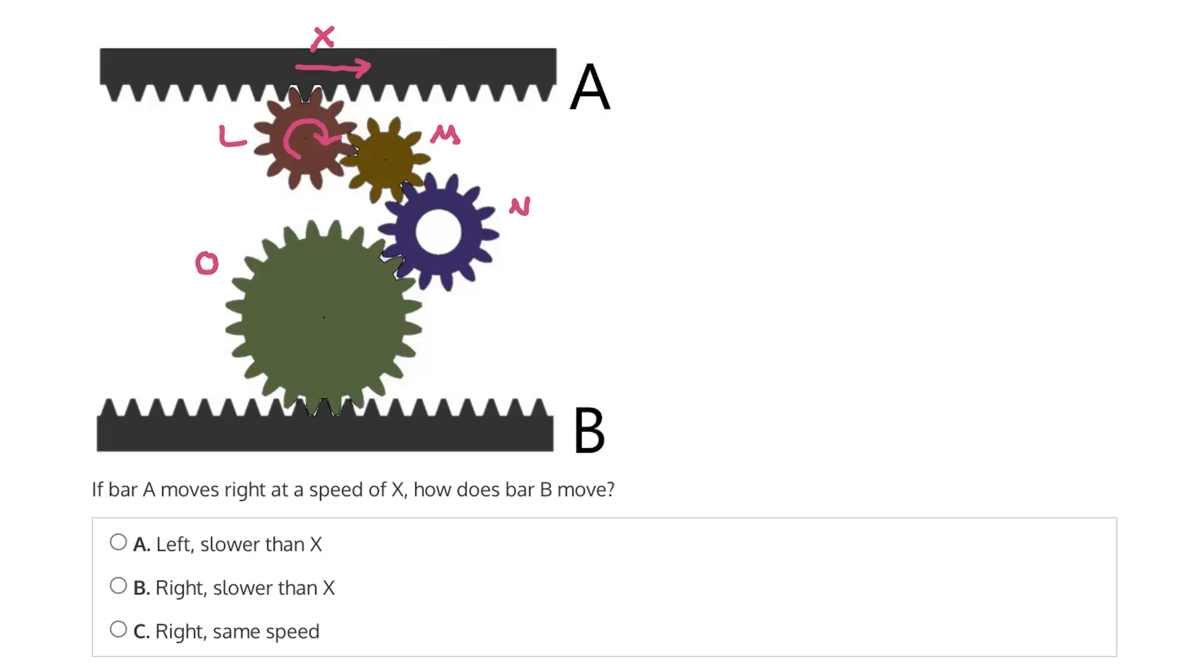Now, we can see that gear L and gear M are directly meshed. And we know that for any two meshed gears, their directions of rotation will be opposite, and their tangential velocities will be the same. So if L is rotating clockwise, then we know M will be rotating counterclockwise. And again, they will have the same tangential velocity, which will be equal to X, but point in a different direction. In this case, the tangential velocity will point this way.